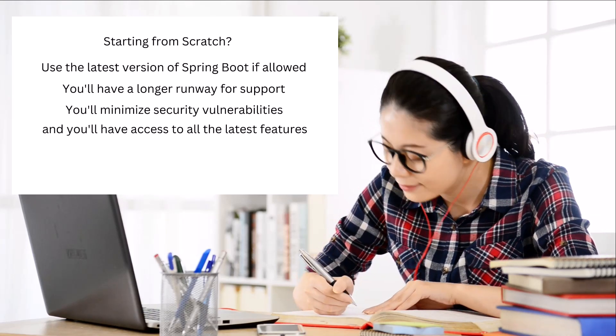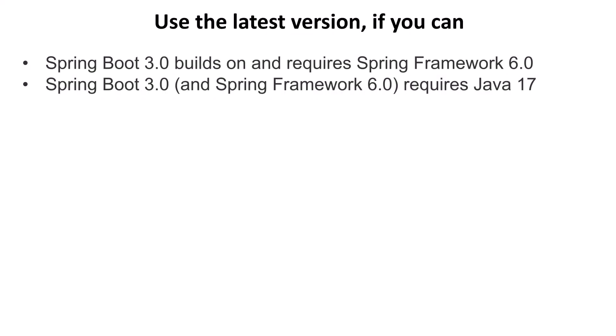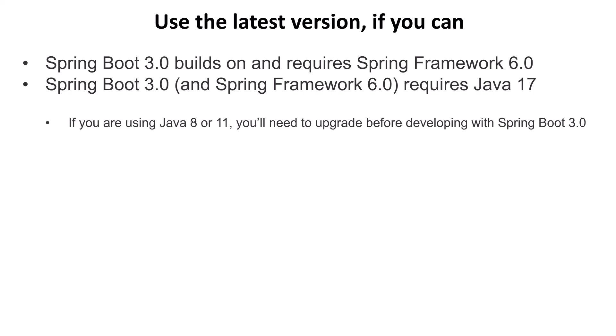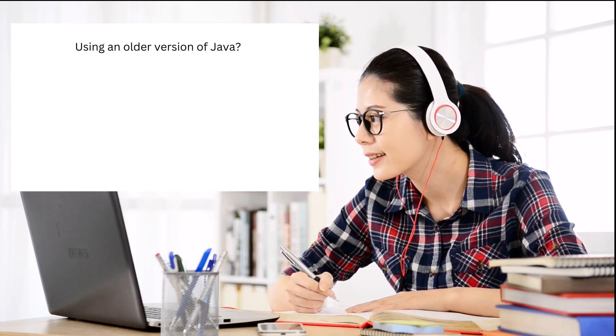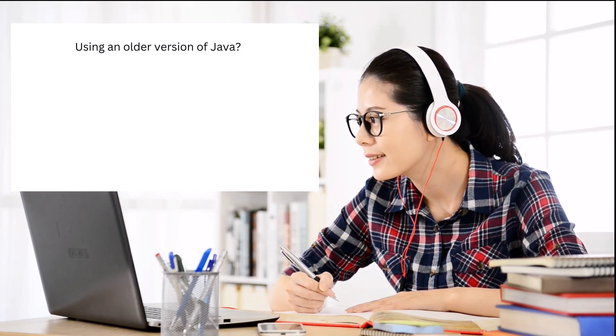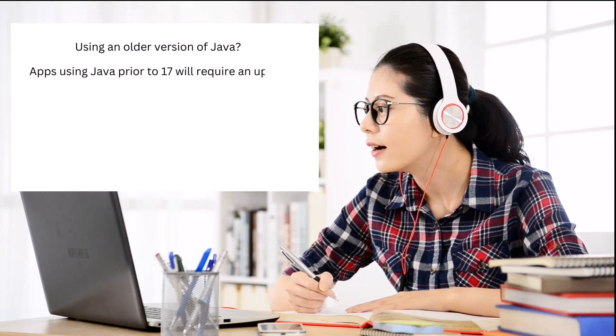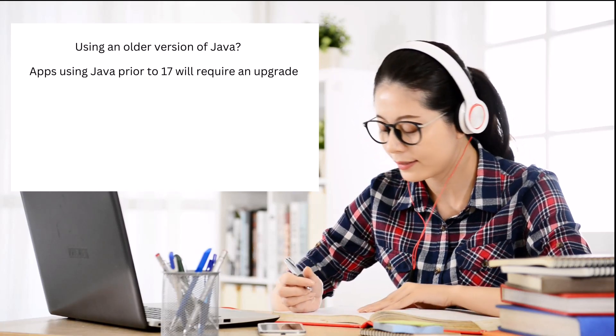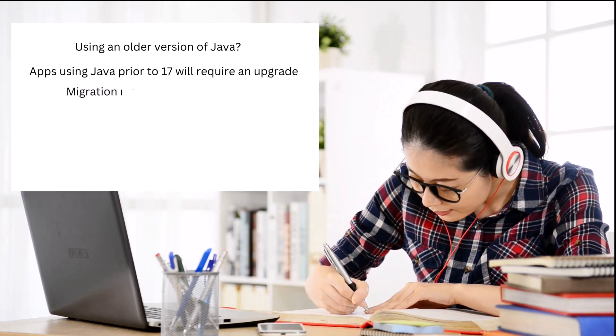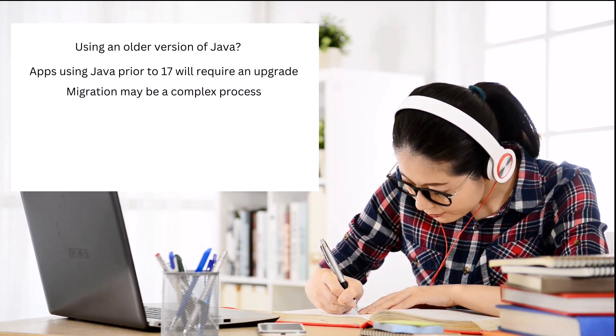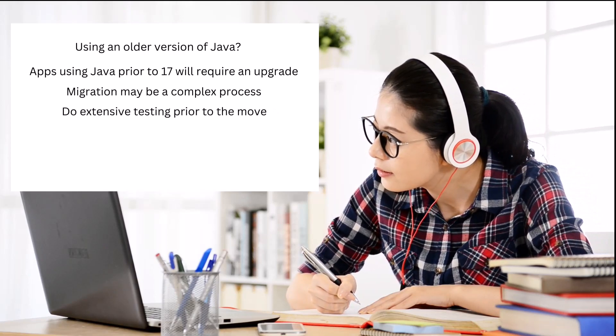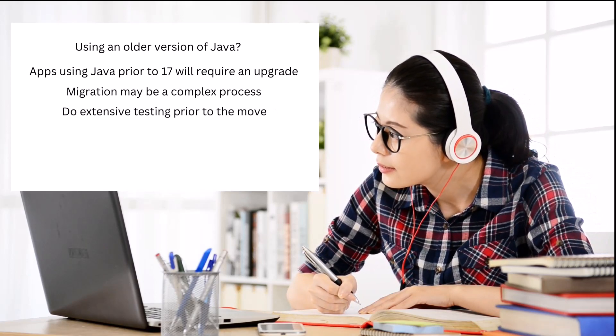But like anything else, all this power comes at a price. Spring Framework 6 and Spring Boot 3 require Java 17 at a minimum. If you're currently on one of the earlier long-term support versions of Java, like version 8 or 11, you'll need to upgrade. Depending on your project, how it's deployed, your company policies, and the controls in place in your organization, moving to a new version of Java could be a huge undertaking.